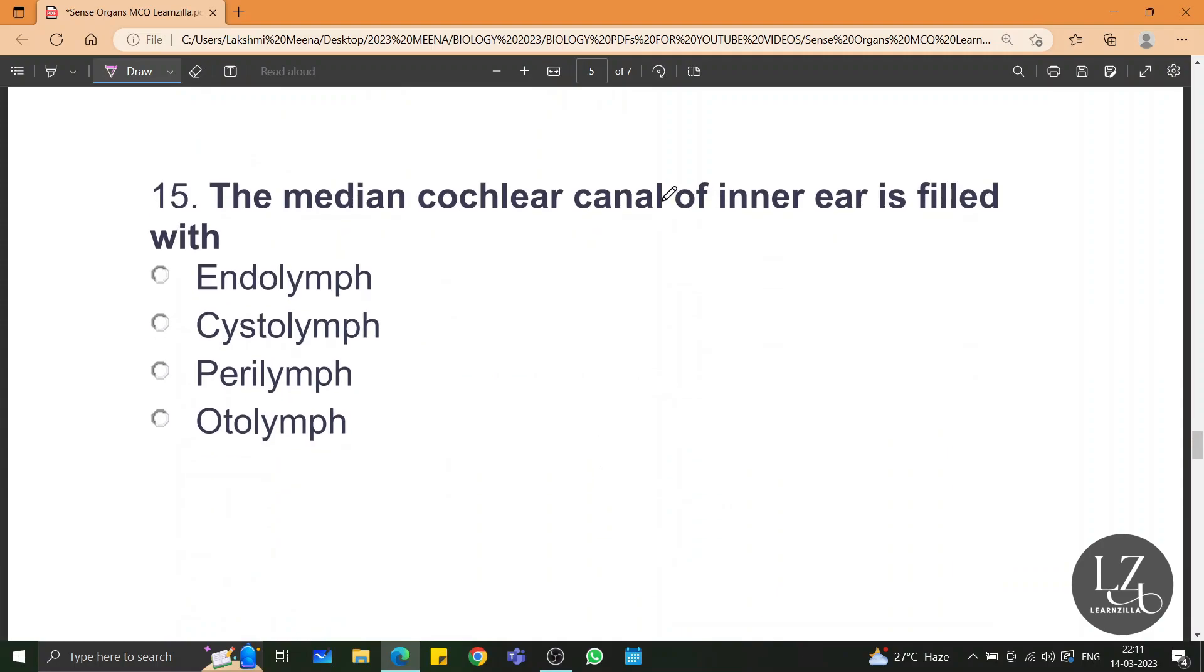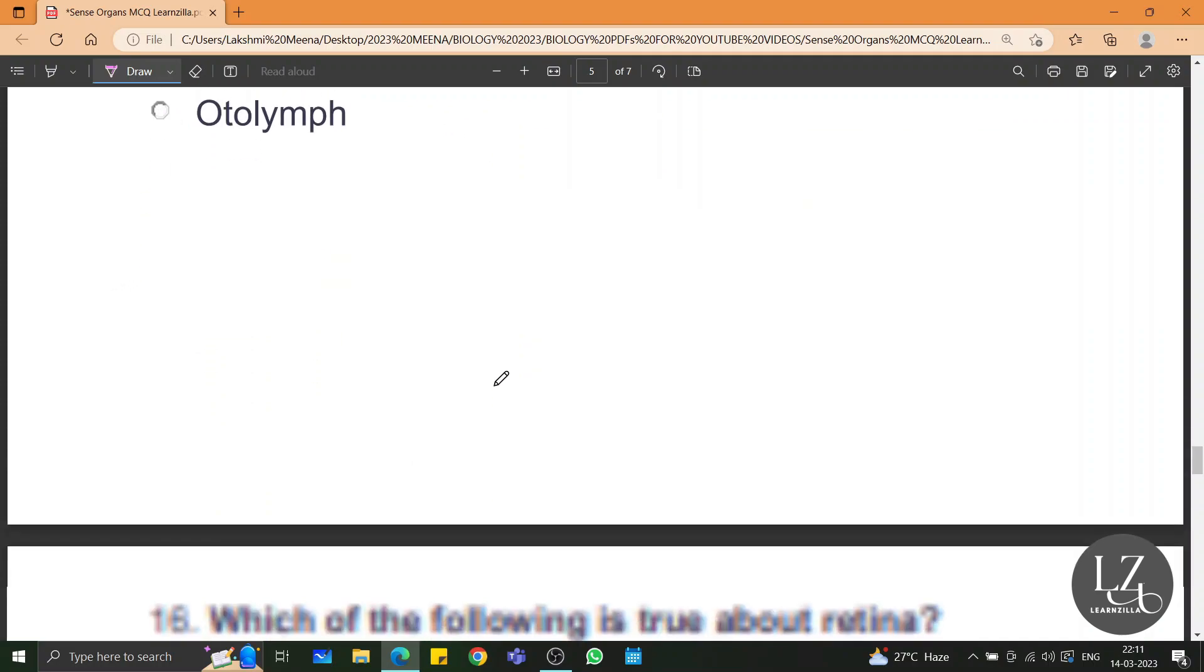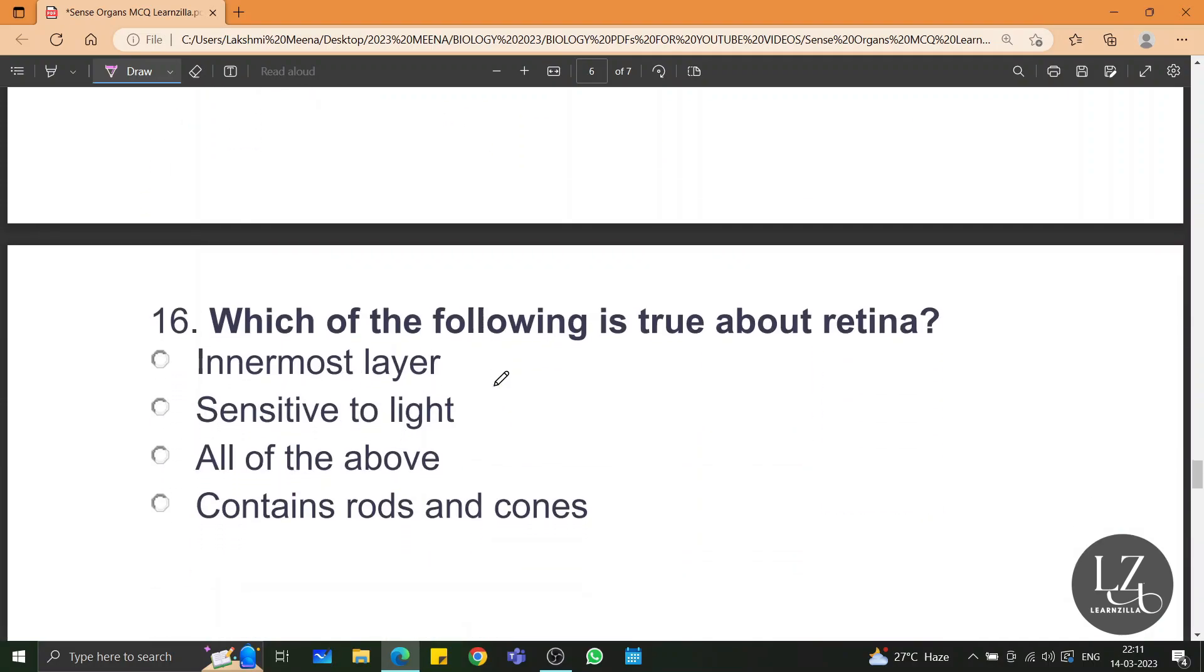The median cochlear canal of inner ear is filled with the endolymph. Which of the following is true about retina? Retina is the innermost layer. It is sensitive to light. It contains rods and cones. So all of these would be the right option.